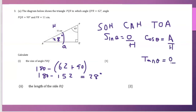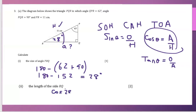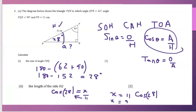Using the angle 28 degrees, I have the hypotenuse and I'm finding the adjacent, so I'll use cosine. So cos 28° equals adjacent over hypotenuse, meaning x over 11. Cross multiplying: x = 11 times cos 28°. Entering into the calculator gives x equal to 9.71 centimeters. That is the length of side RQ.